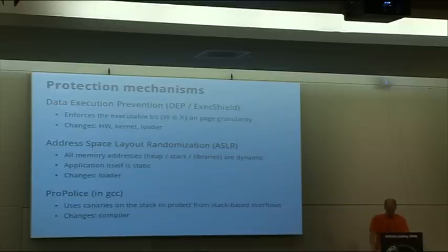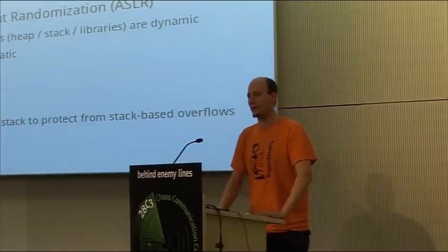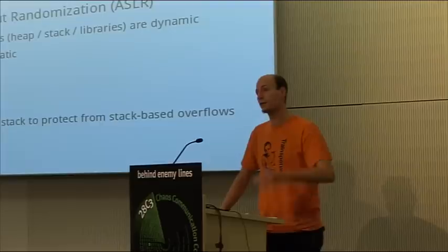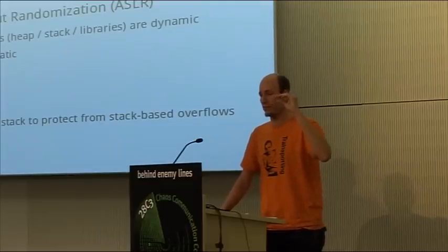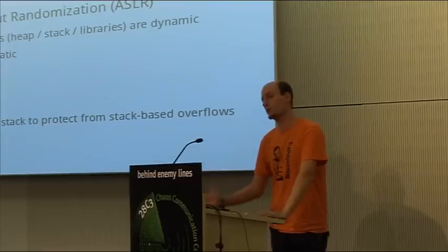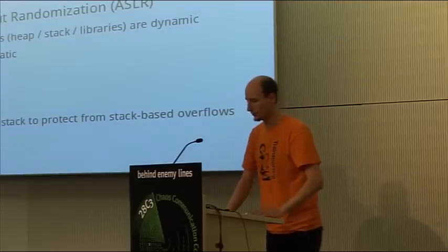The last important protection mechanism is ProPolice, used in more current versions of GCC. ProPolice adds additional canaries. A canary is a little bird that miners used to take down into the mine — if the bird died, they knew the air was getting thin and they should get out. The same idea applies to canaries on the stack: the compiler places secret hidden values at specific stack locations and checks them at intervals. If there has been a buffer overflow, the canary values will change, and the program will detect that and terminate itself.